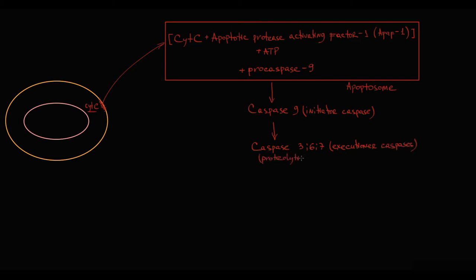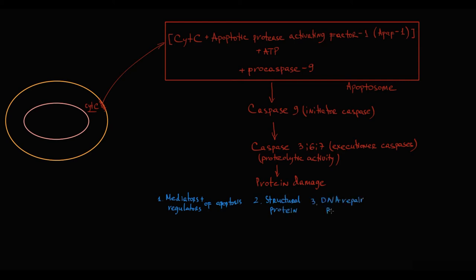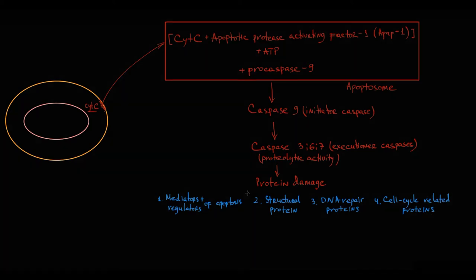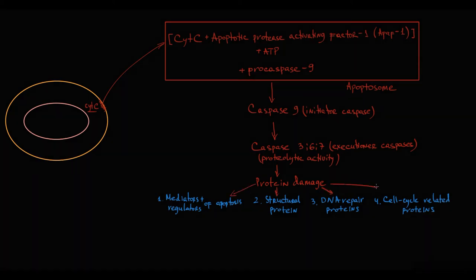Executioner caspases cleave intracellular proteins and by this cause severe structural damage to them. They affect four major categories of intracellular proteins: mediators and regulators of apoptosis, structural cellular proteins, cellular DNA repair proteins, and cell cycle-related proteins. All these proteins are of vital importance for the cell, and structural damage to them inevitably leads to cell death.